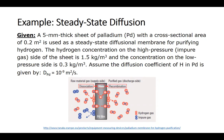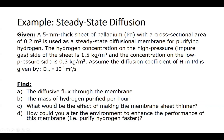We're going to assume the diffusion coefficient at room temperature of hydrogen and palladium is given by 10 to the minus 9 meters squared per second.